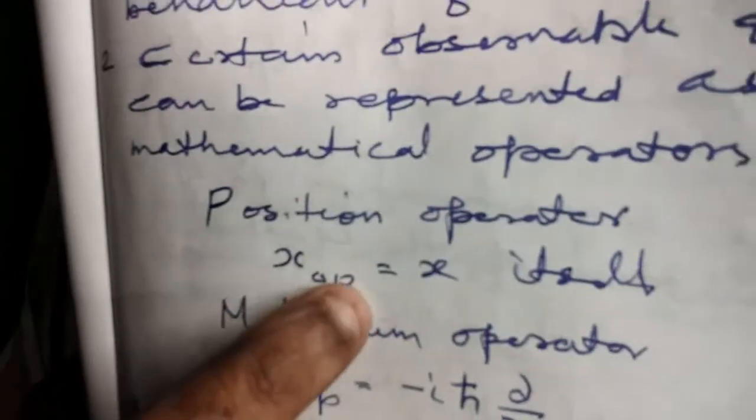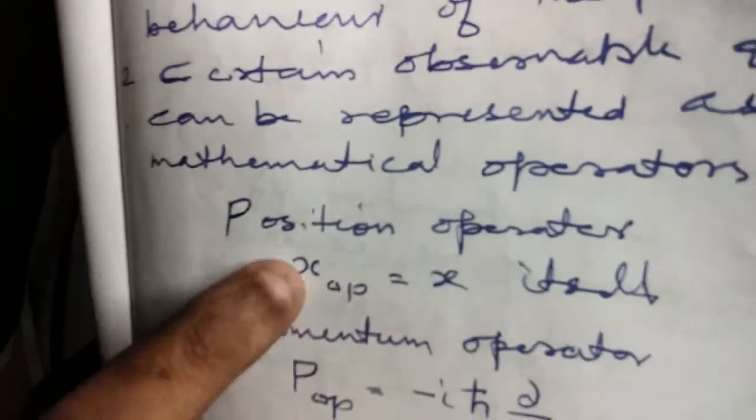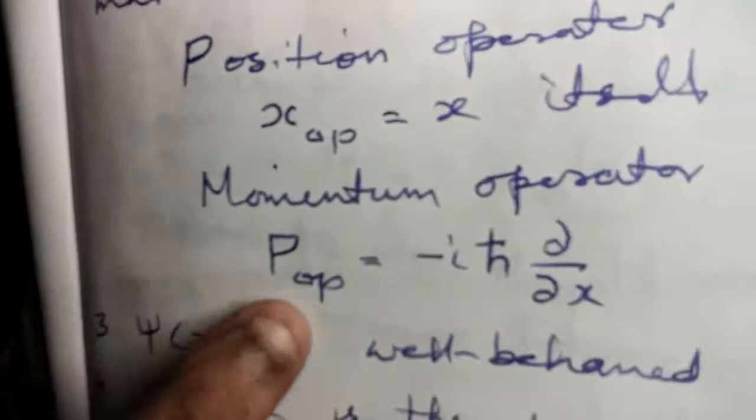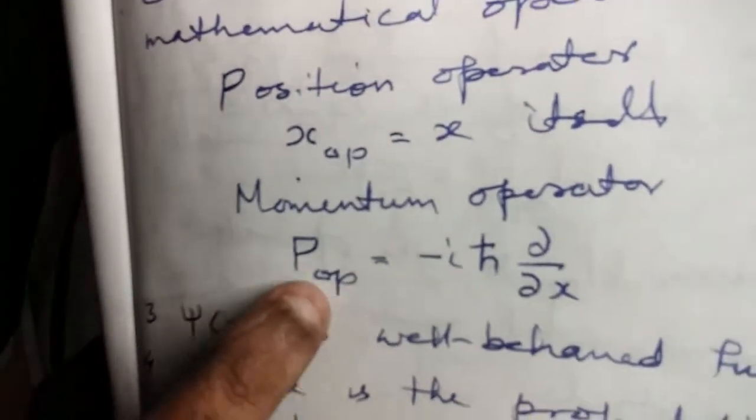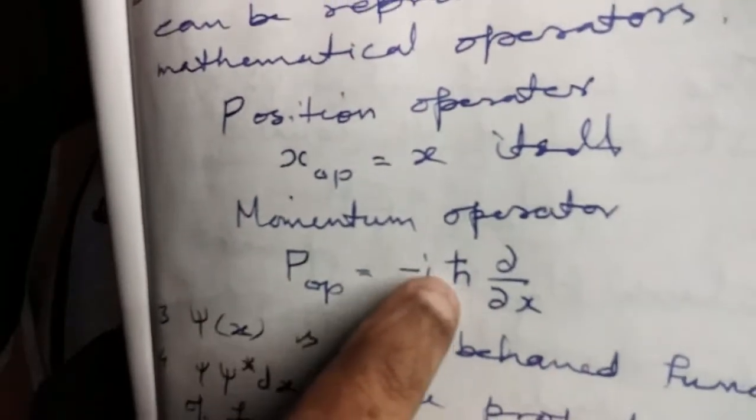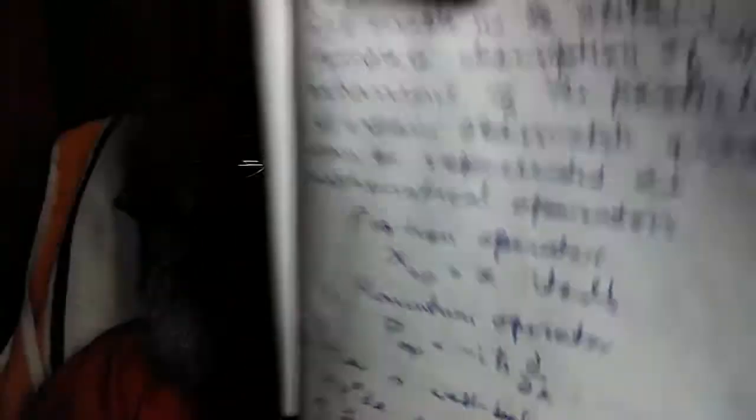Certain observable quantities can be represented as mathematical operators. The position operator is x-op — that is the x-coordinate. The momentum operator p is minus i h-bar times dou by dou x.